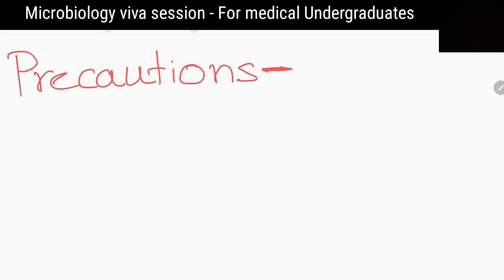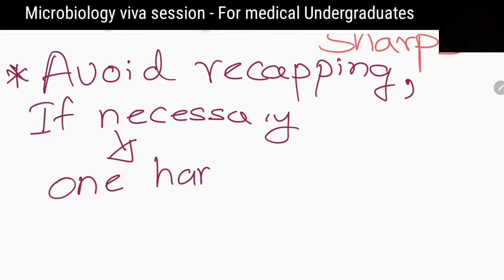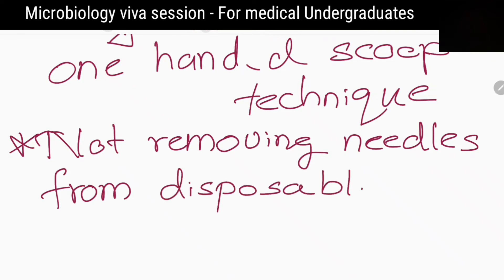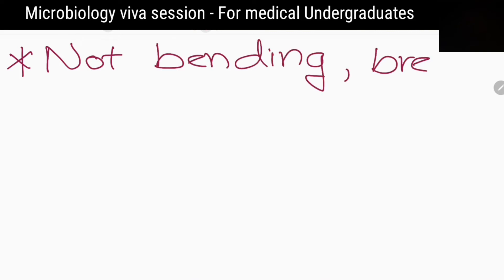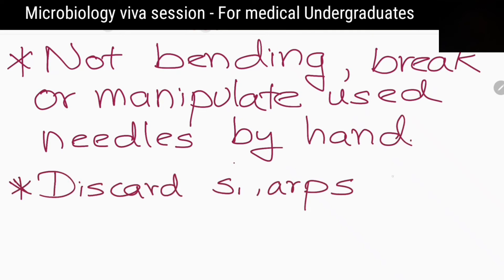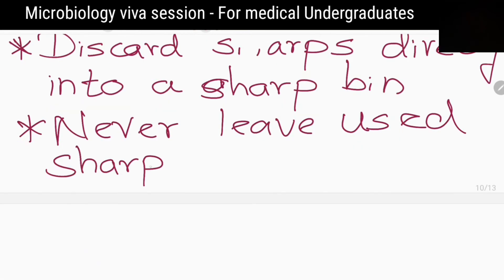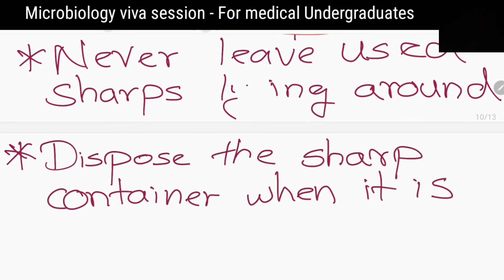Tell me some precautions that we should take when handling needles in a hospital setting. Avoid recapping used needles, but if necessary, the one-handed scoop technique can be used to recap. Not removing needles from disposable syringes by hand. Not bending, breaking, or manipulating used needles by hand. Discard sharps directly into the sharps bin and never leave sharps lying around. If the sharps bin is at a distance, the sharps should carefully be carried on a tray and must not be passed directly from hand to hand. Dispose of the sharps bin when it is three-quarters full.